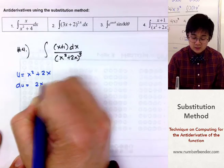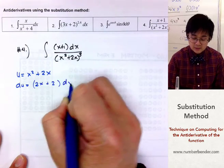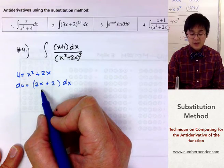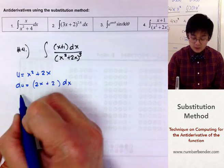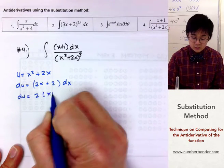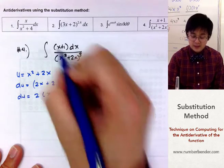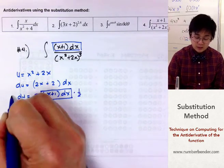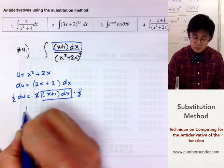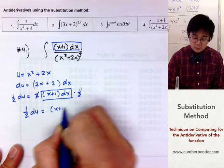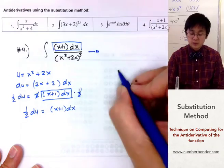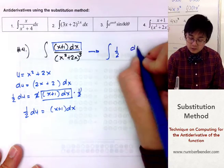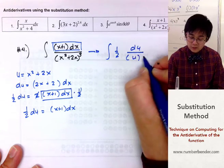The derivative of u is 2x plus 2 dx. The numerator doesn't look the same at first, but if I factor out the 2 it becomes 2 times (x plus 1) dx. So the derivative of u can be written as 2(x plus 1) dx. Multiplying both sides by one half, one half du equals x plus 1 dx. Rewriting the integral, it becomes the integral of one half du all over u raised to the third power.